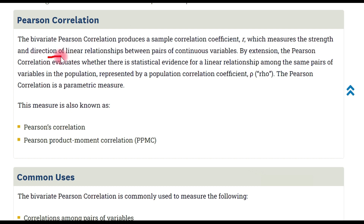The Pearson correlation will be used to measure the strength of the correlation between two continuous variables. The direction of the relationship is used to measure the strength of the correlation coefficient.